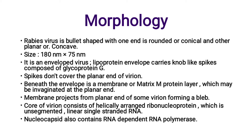First, the morphology of Rabies Virus. Rabies Virus is a bullet-shaped virus with one end rounded or conical and the other end planar or concave. The size of Rabies Virus is 180 nanometers by 75 nanometers. It is an enveloped virus with a lipoprotein envelope carrying knob-like spikes composed of glycoprotein G.